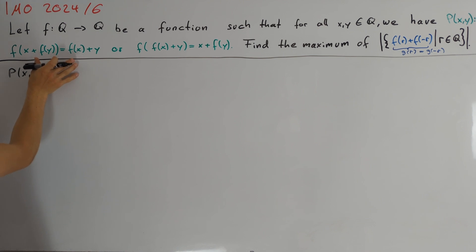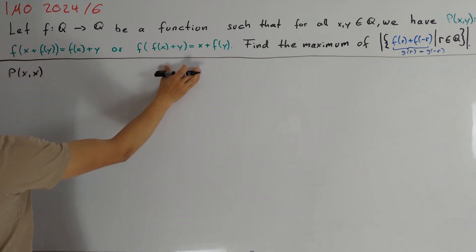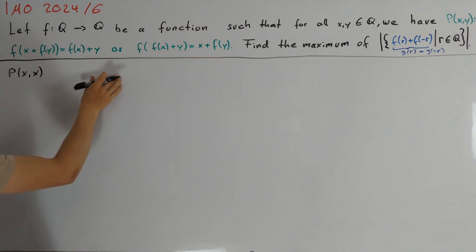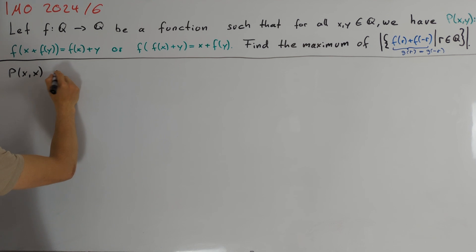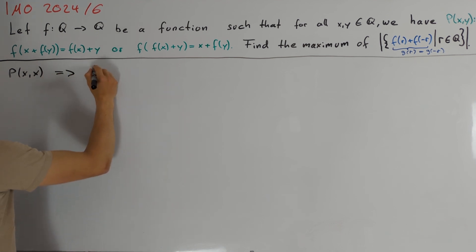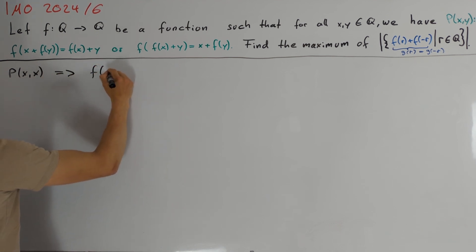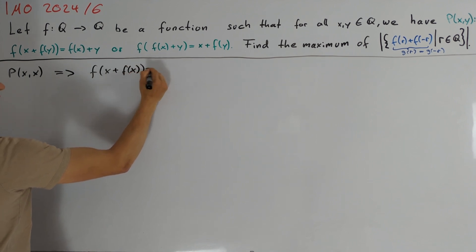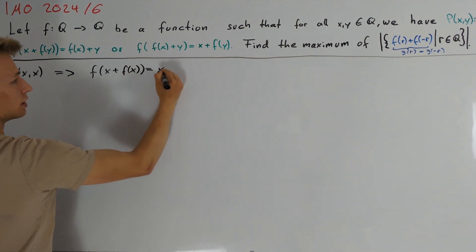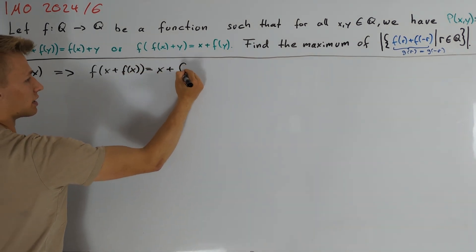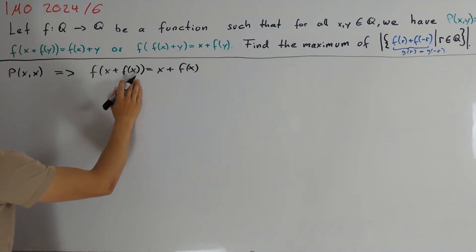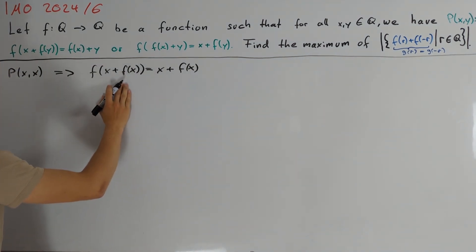We start by taking a look at P(x,x), because then we see that both equations are equal. Since at least one of them is true, we get that both of them are true, and we conclude that f(f(x)+x) = x + f(x). In other words, x + f(x) is a fixed point of our function.